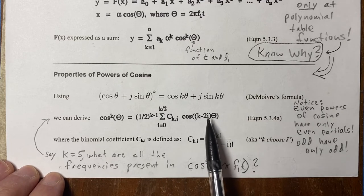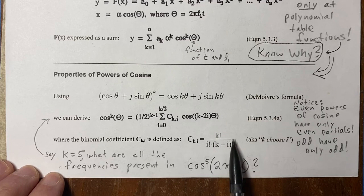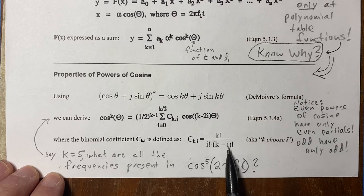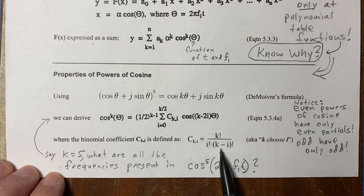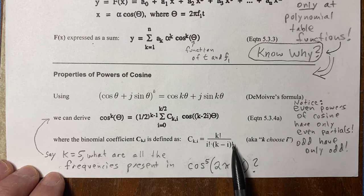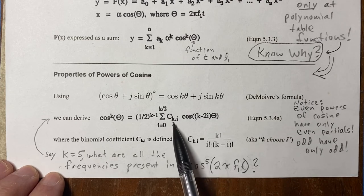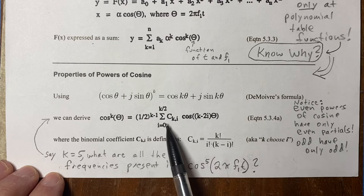How loud are those harmonics? You have this binomial coefficient here — C(k,i) — so you know what the amplitudes of each of those harmonics are going to be. If you have k as an odd power, you know how loud each of the odd harmonics will be.